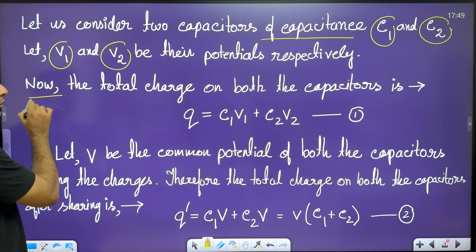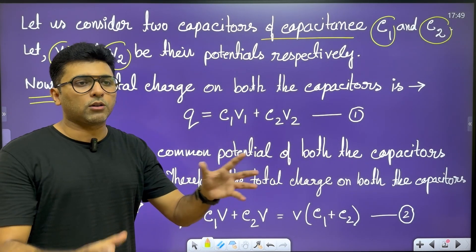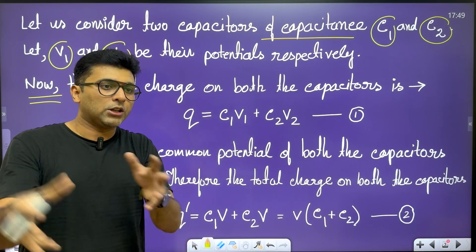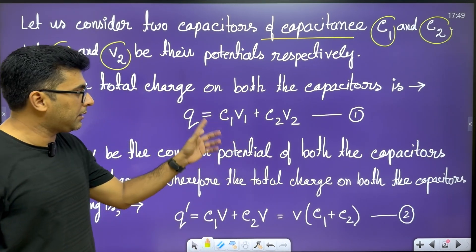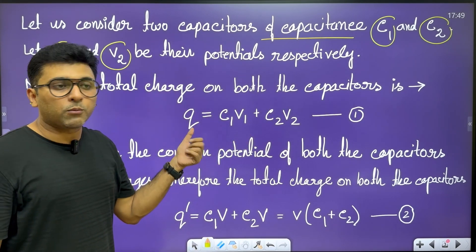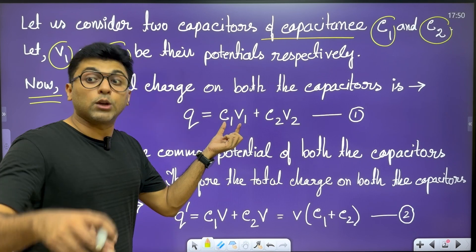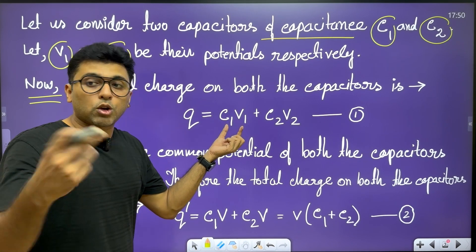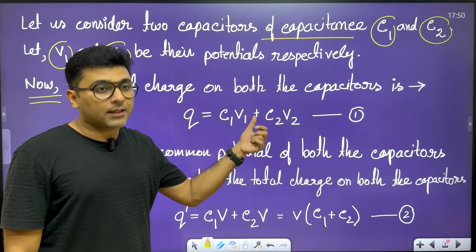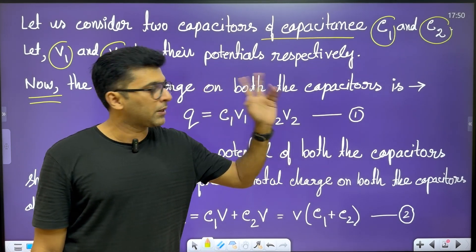The total charge on both capacitors — since we cannot change the charge in an isolated system — the total charge is Q. Q equals Q1 plus Q2, which is C1V1 plus C2V2. This is equation number 1.